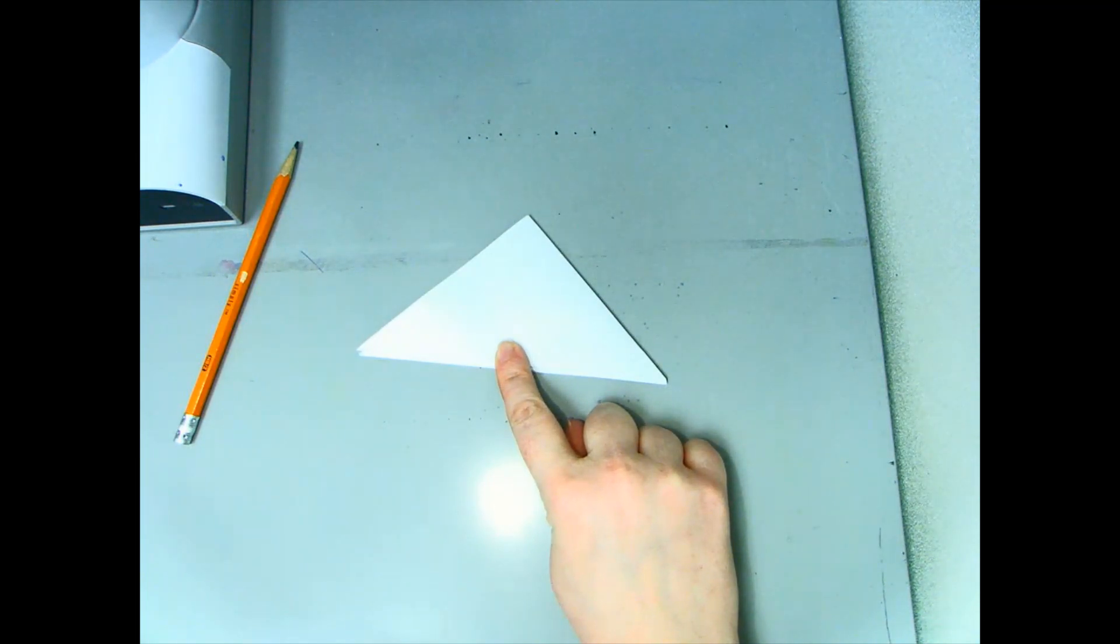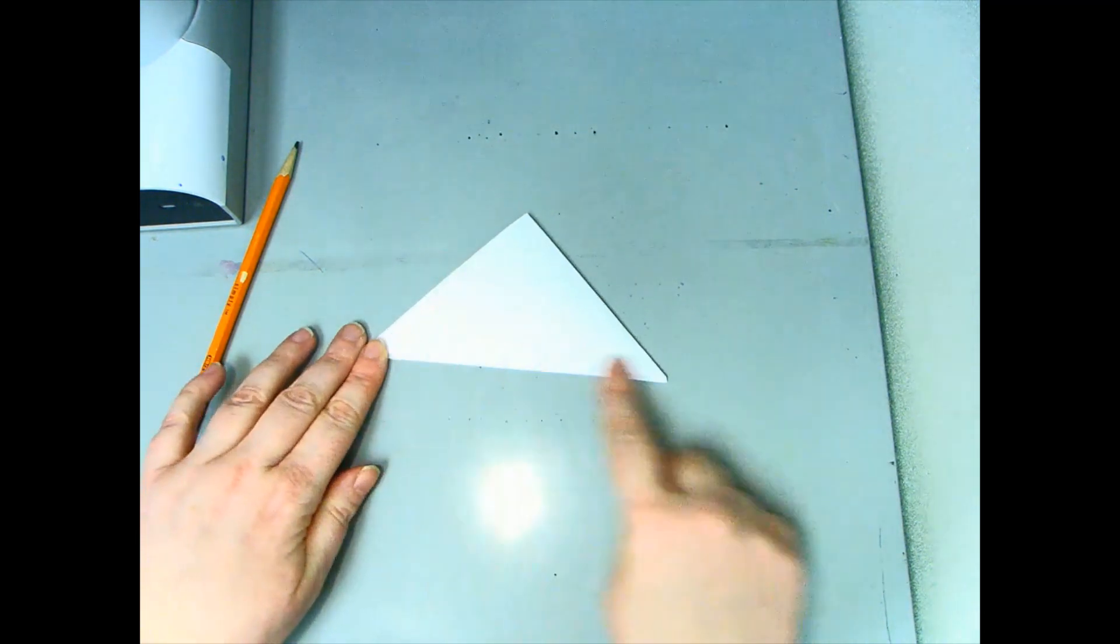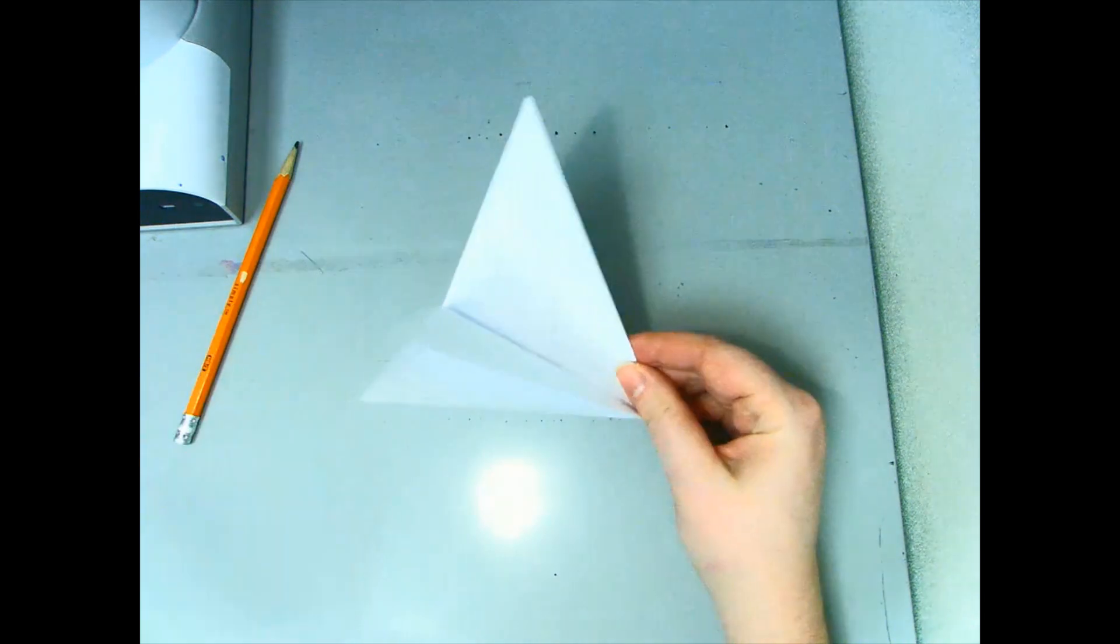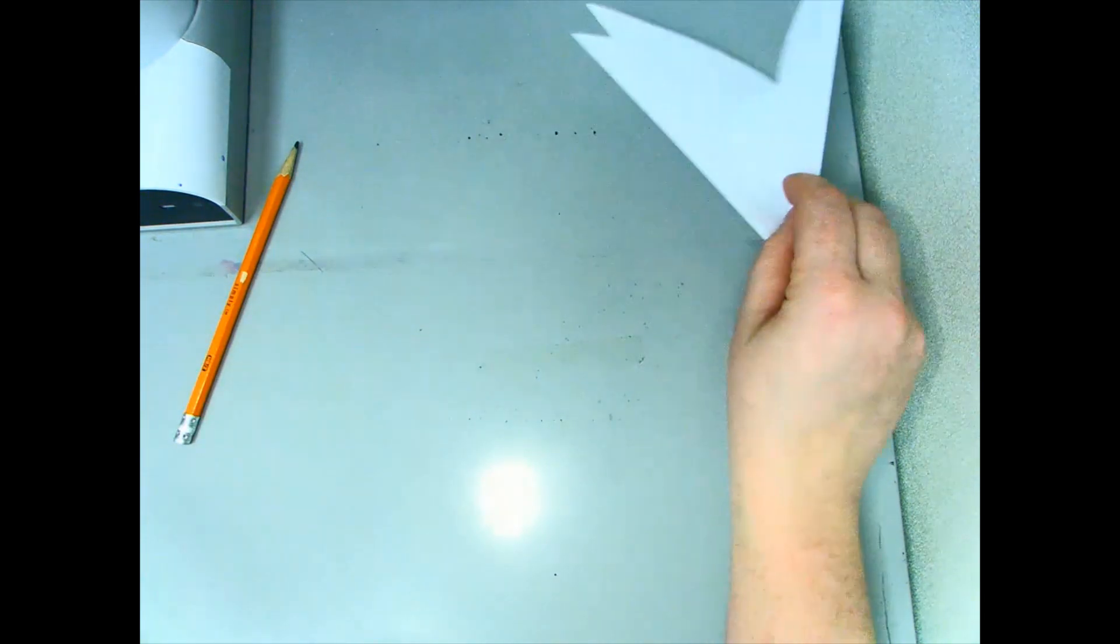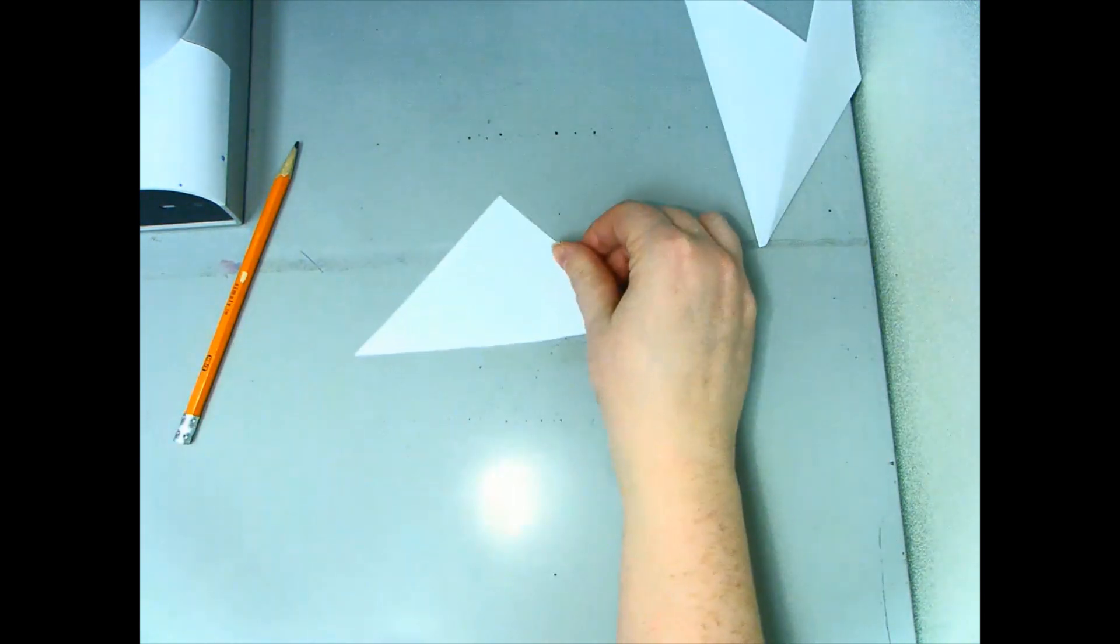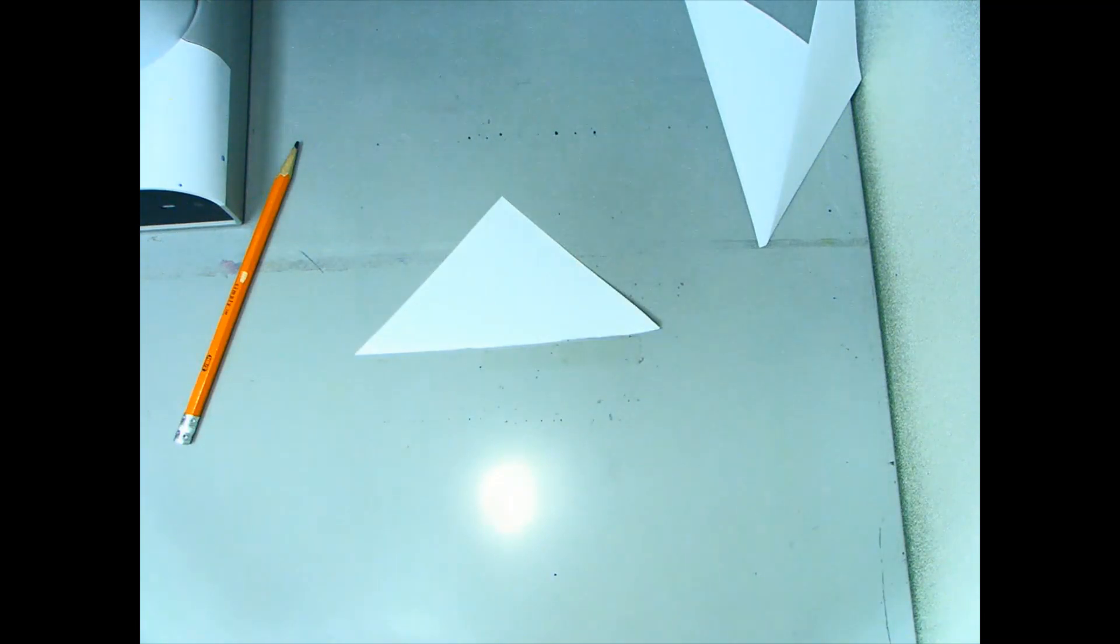When you have both of them folded, you're going to cut one of them into pieces so that you only have one of these little triangles and one whole square sheet of paper. This triangle will become your template.